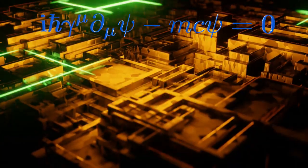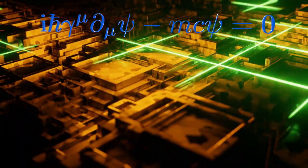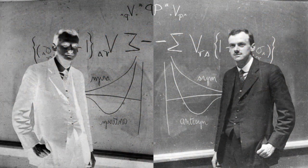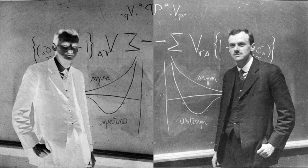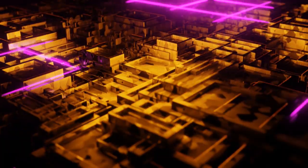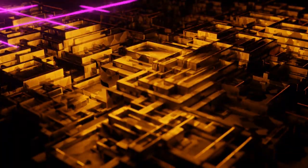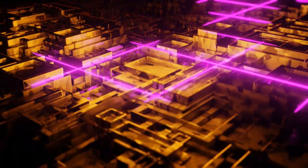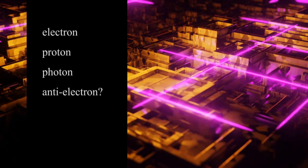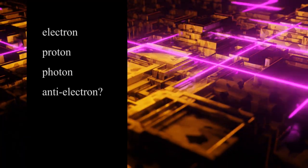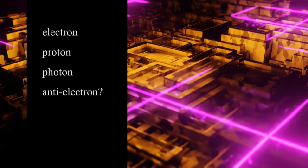Dirac soon realised his equation had some very curious features. It only seemed to work consistently if the electron had a mirror image counterpart — a particle with the same mass as an electron but opposite electric charge. So whereas the electron has a negative electric charge, this mirror particle would have a positive electric charge. In 1931 Dirac suggested we might refer to this hypothetical particle as an anti-electron. This was in the very early days of particle physics, when the only known fundamental particles were electrons, protons, and photons — the fundamental constituents of light.